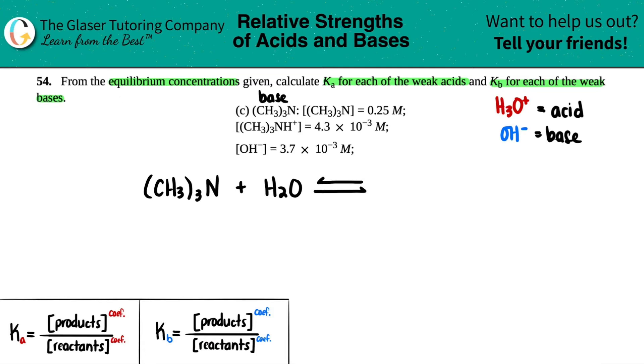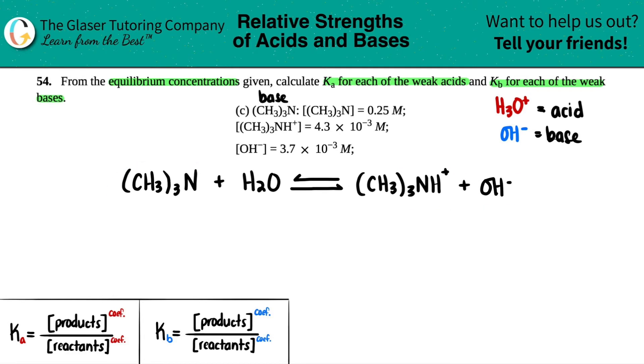If this is a base, remember bases always gain a hydrogen, and that's why one of the compounds is (CH3)3NH+, which is your conjugate acid. If this gained a hydrogen, the H2O had to lose a hydrogen, and that's where the hydroxide comes in - OH-. So there's our balanced equation.